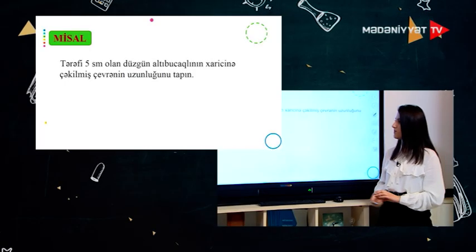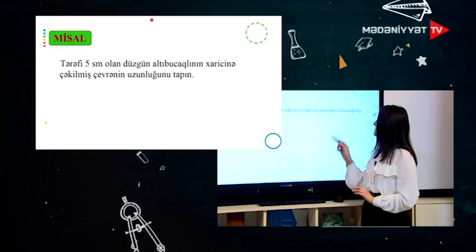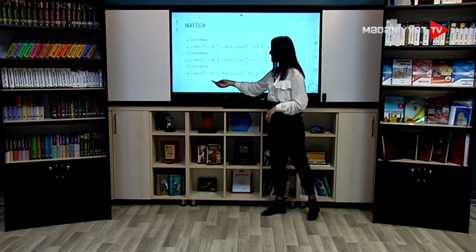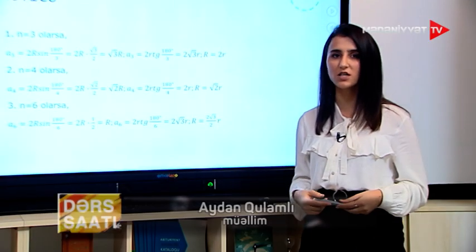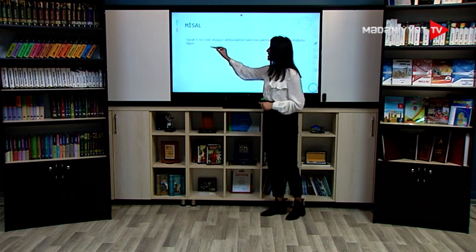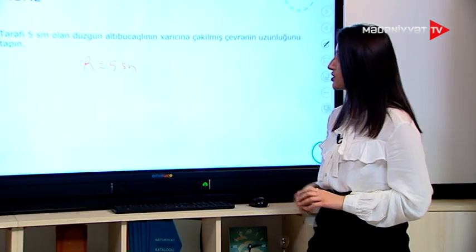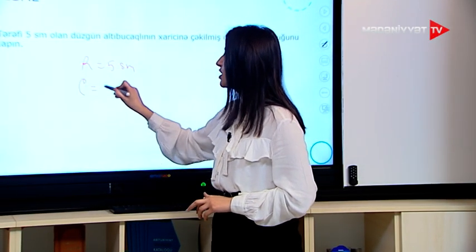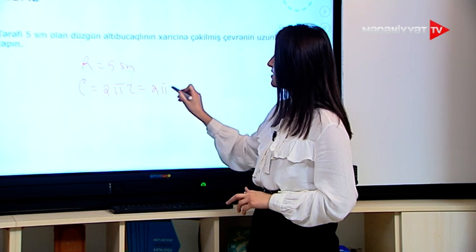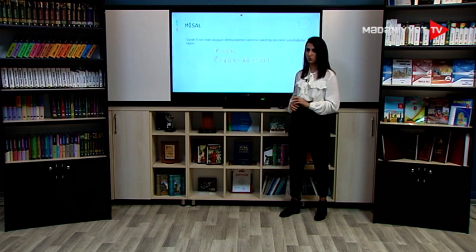Bir misalımıza baxaq: tərəfi 5 cm olan düzgün altı bucaqlının xaricinə çəkilmiş çevrənin uzunluğunu tapın. Düsturumuzda qeyd elədik ki, a₆ = R-ə bərabərdir, yəni altı bucaqlının xaricinə çəkilmiş çevrənin radiusu onun tərəfinə bərabər olur. Buradan alırıq ki, bizim çevrəmizin radiusu 5 cm-imiş. Çevrənin uzunluğunu tapmaq üçün: C = 2πr = 2π × 5 = 10π. Deməli, çevrəmizin uzunluğu 10π olacaq.